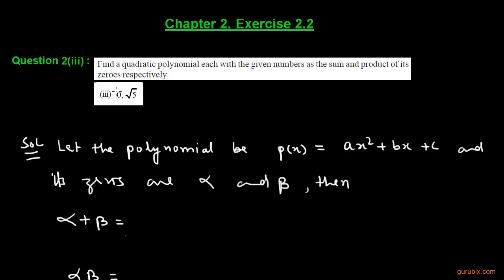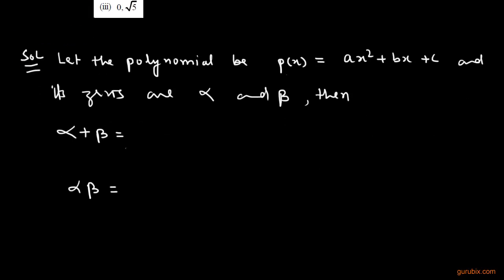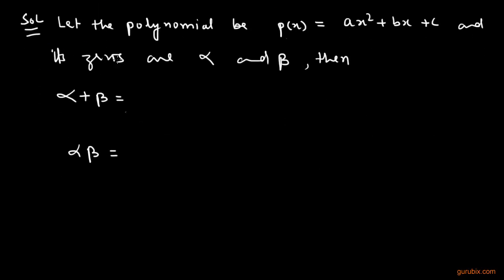Sum of its zeros is given 0 and the product of its zeros is given root 5. Let us see how to solve this question. This is a very easy question.